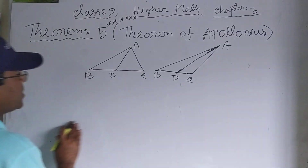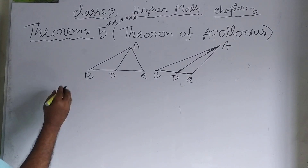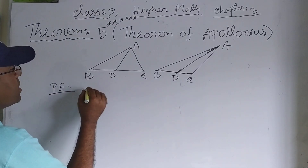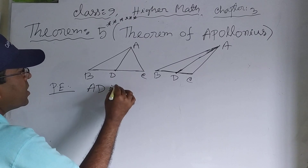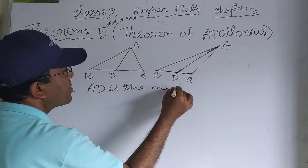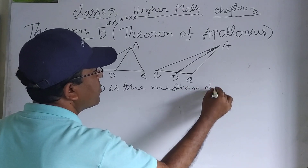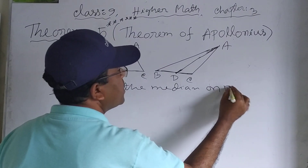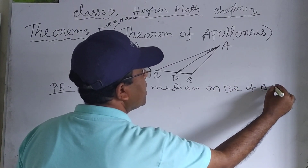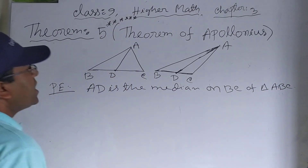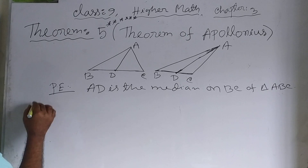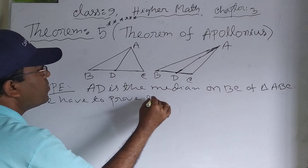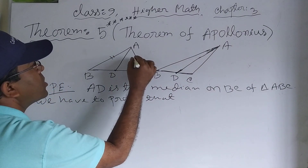So we will start the proof. AD is the median on BC of triangle ABC. We have to prove the theorem.